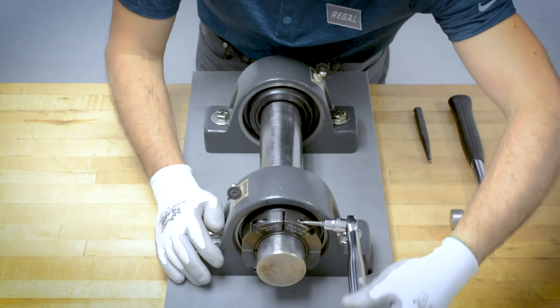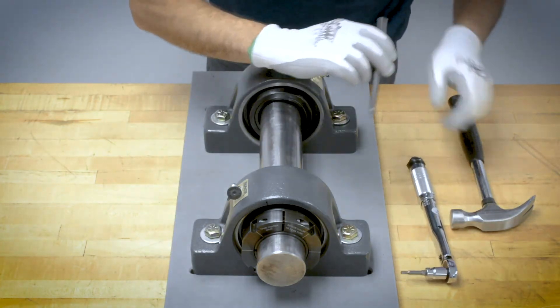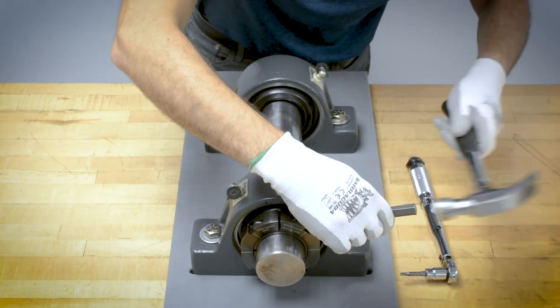For bearing removal, reverse the previous steps. When loosening the collar nut, it can be expected to alternate between drift and hammer and rotation by hand until the collar comes loose.